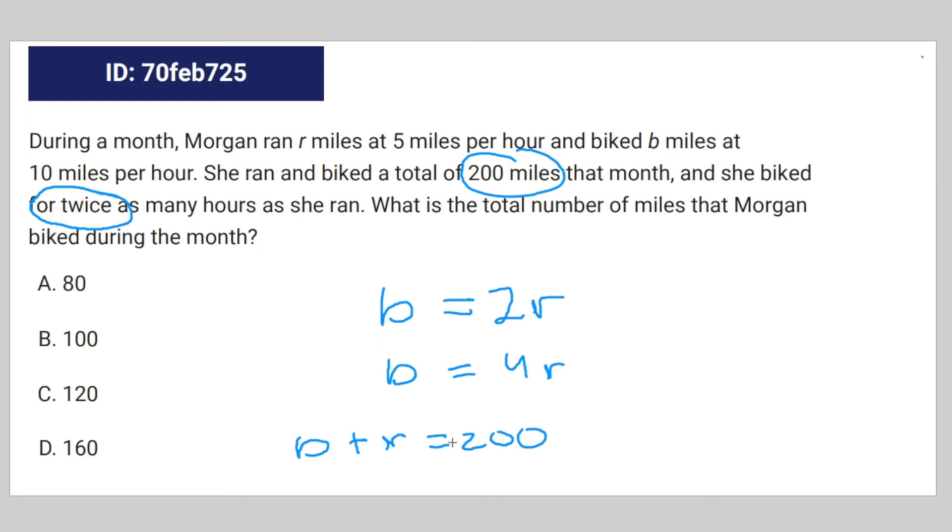If you substitute b for 4r, you get 4r plus r equals 200, which is 5r equals 200, which means that she ran for 40 miles this month.